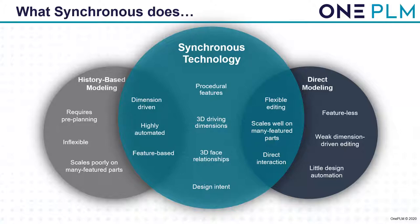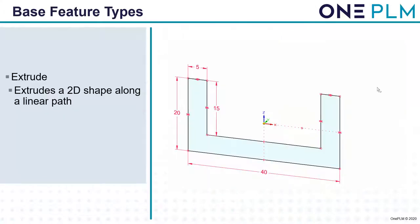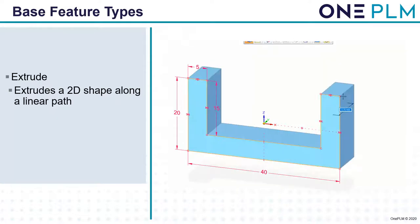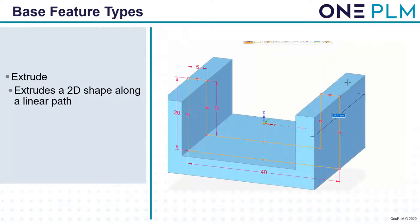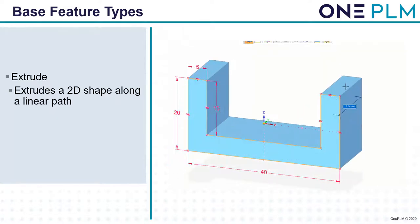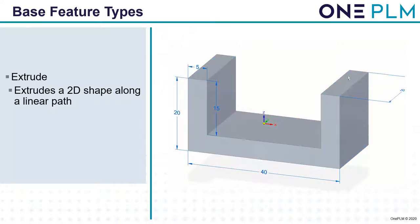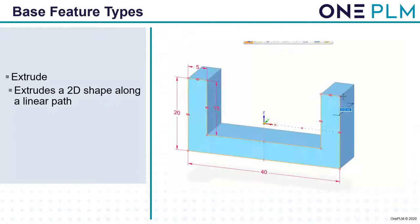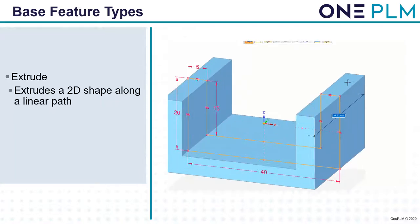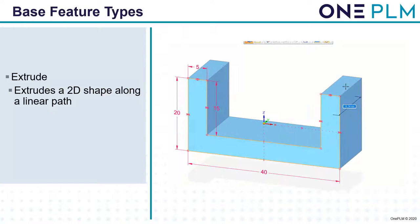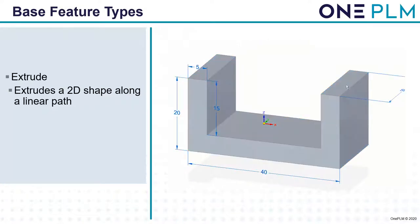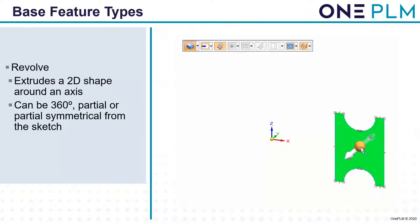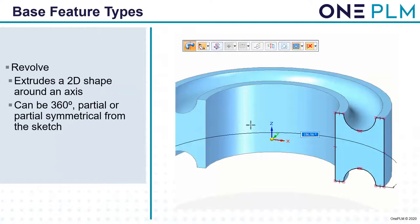The technology is so unique to Siemens that the last time I checked there were eight patents granted with a further 23 pending. Let's look at base feature types. The first is extrude — this extrudes a shape along a linear path. From the image you can see we select the region, select the arrow, and we can extrude that one way, the other way, or use symmetric from a quick keyboard shortcut.